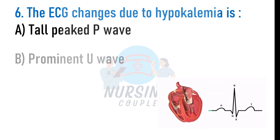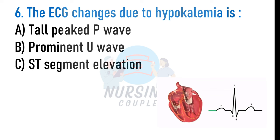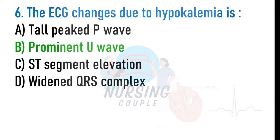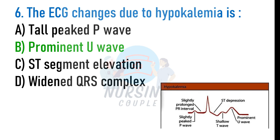The ECG changes due to hypokalemia are: A. Tall peaked P waves, B. Prominent U wave, C. ST segment elevation, D. Widened QRS complex. The answer is B: Prominent U waves. Hypokalemia is serum potassium level lower than 3.5 mEq/L. Potassium is a major intracellular cation that helps maintain resting membrane potential and generate action potential in the nervous system and the heart. Hypokalemia increases diastolic repolarization of Purkinje fibers and reduces repolarization reserve, leading to prominent U waves on ECG.